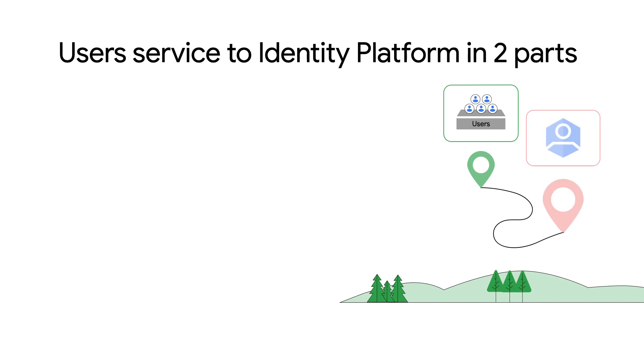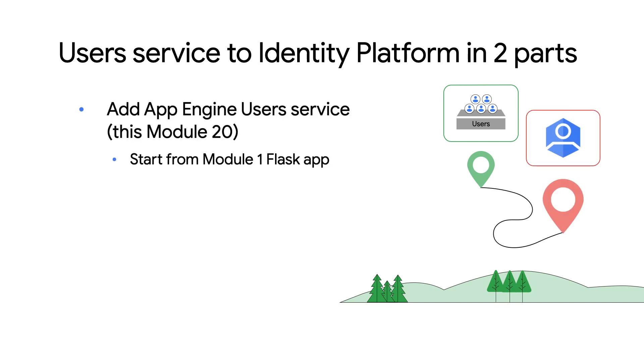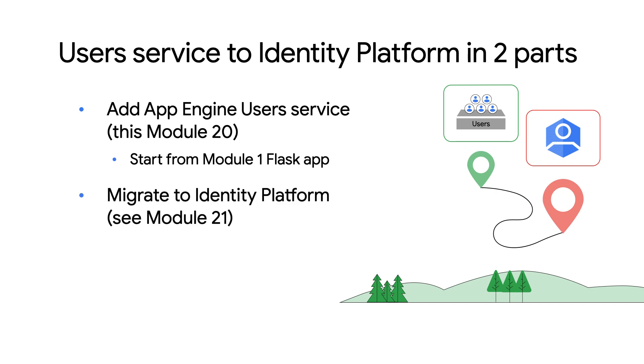You're right. Usually, Porter does take users from point A to point B. But here in module 20, we need to take a detour first to reacquaint folks with App Engine users. We'll add its use to the module 1 sample app, and then we can migrate to Identity Platform in module 21. We're taking one of our original Python 2 apps, adding the App Engine user service to it, and then we migrate that app from the old user service to the new Identity Platform.